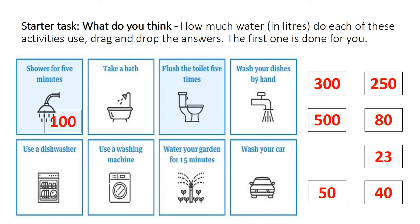First, a nice simple starter task. I want you to think about the eight different activities on the page: taking a shower for five minutes, taking a bath, flushing the toilet, washing your dishes by hand, using a dishwasher, using a washing machine, watering the garden for 15 minutes, and washing the car. One has been done for you, so you've got seven left to match.